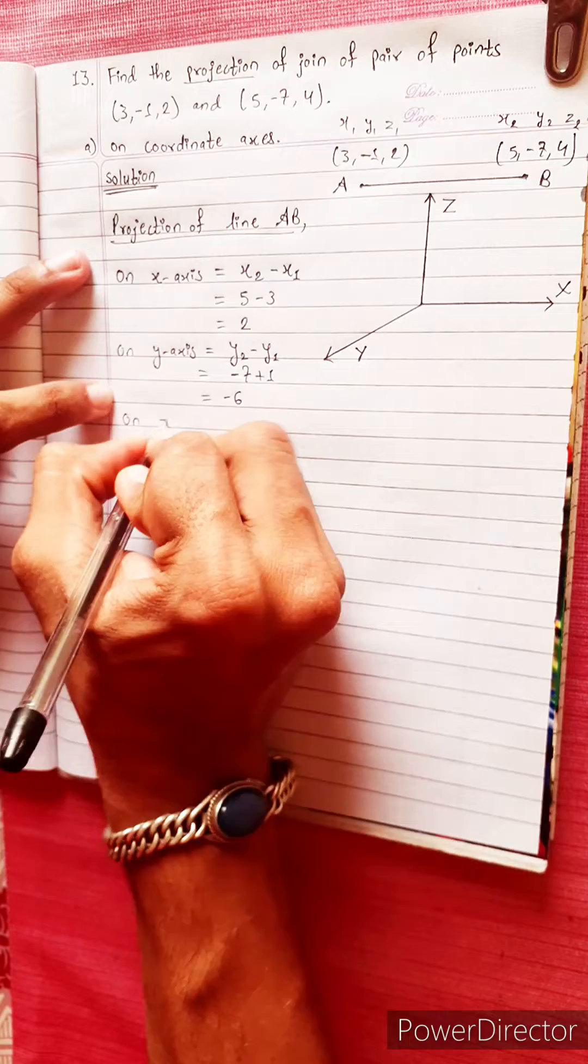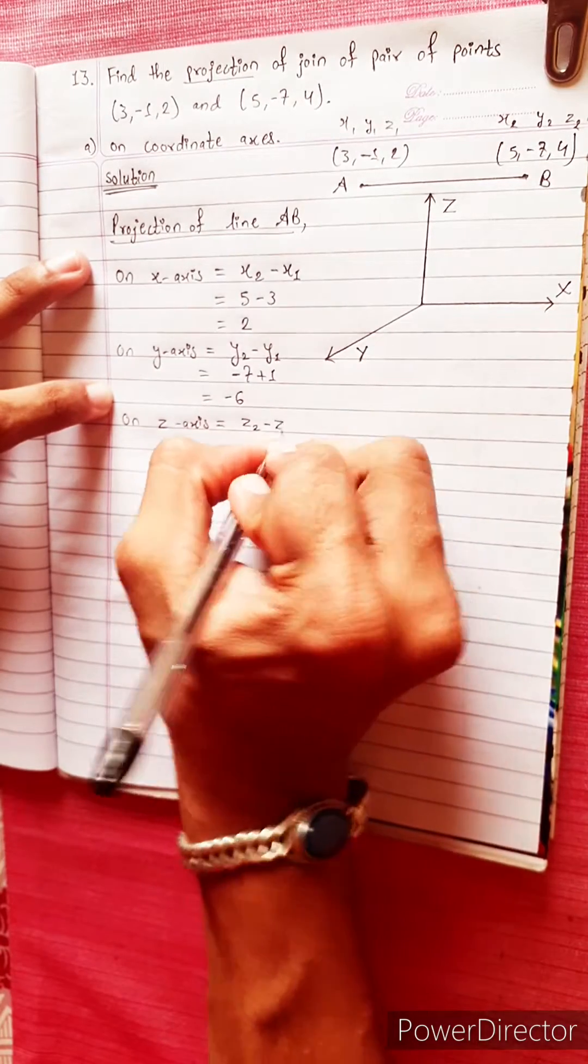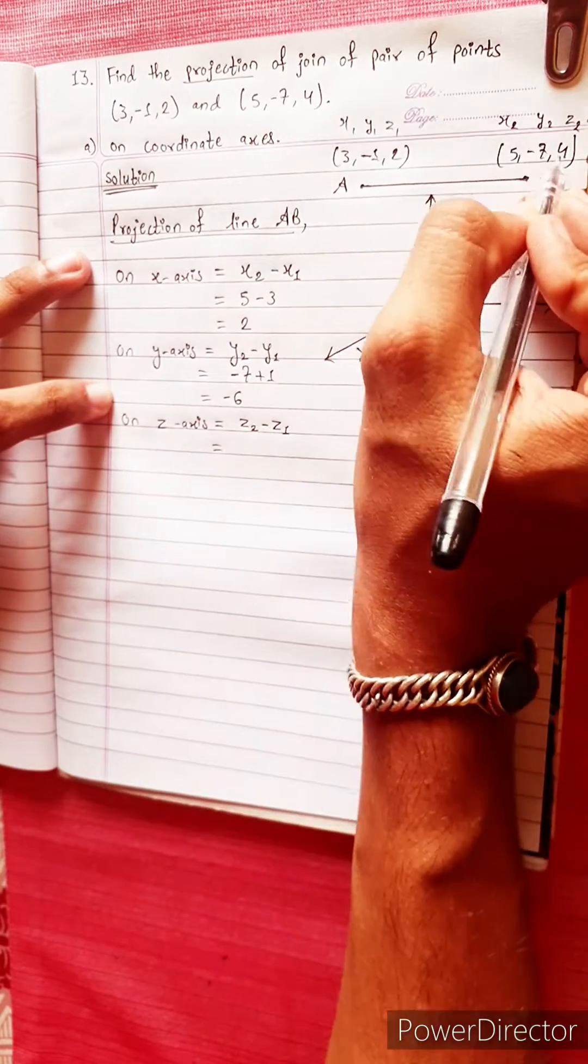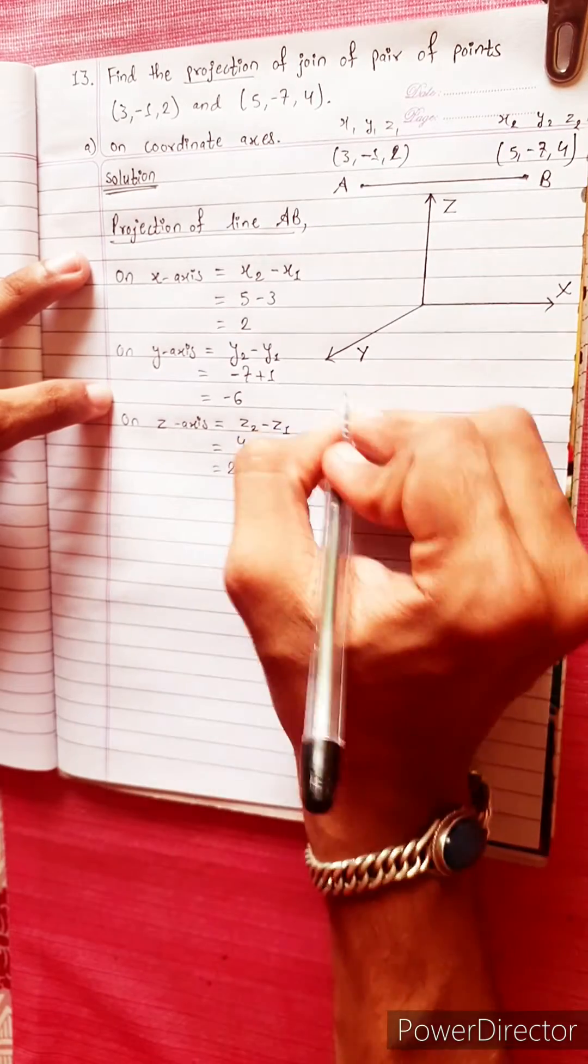Projection on z-axis. z2 minus z1. Equals z2 is 4, z1 is 2. 4 minus 2 equals 2. Therefore.